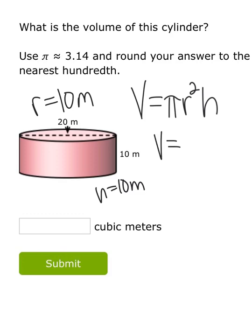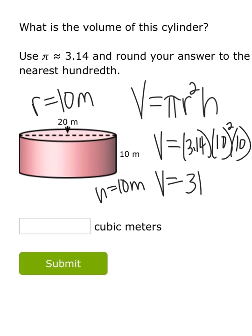Also remember to use 3.14 whenever you're typing this in your calculator to evaluate this answer. So we would have for the volume 3.14 times 10 squared times 10 to find the volume. Our volume would be 3,140 cubic meters, and then you would just type that in and submit.